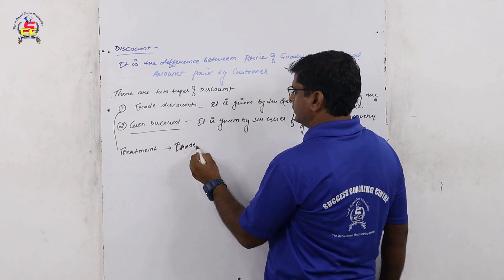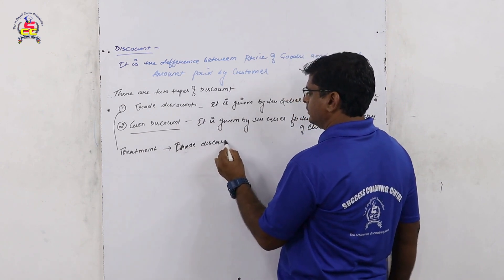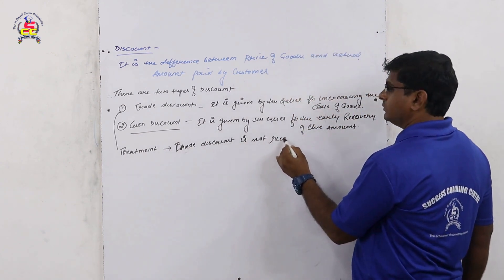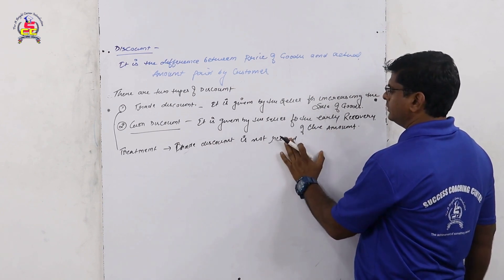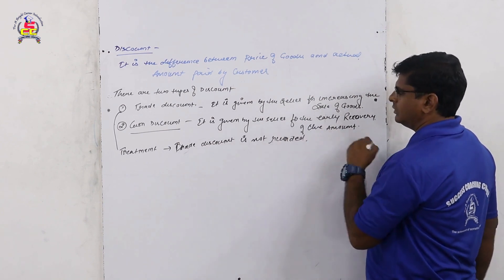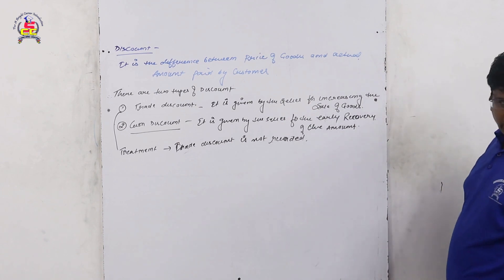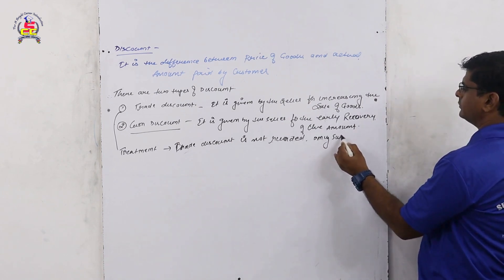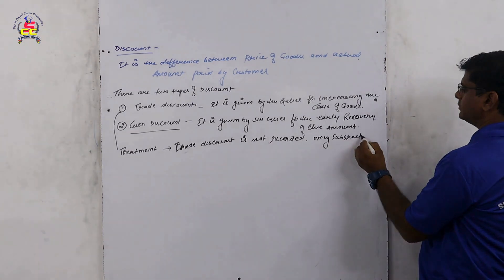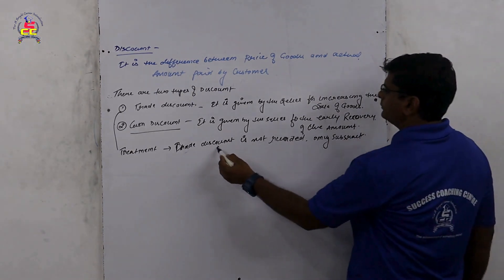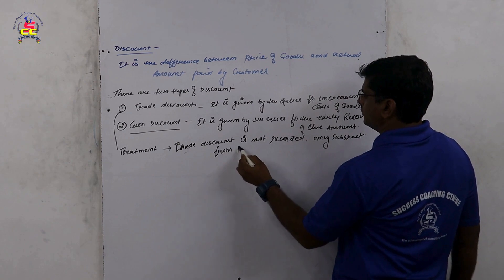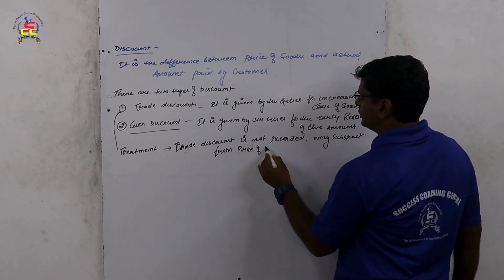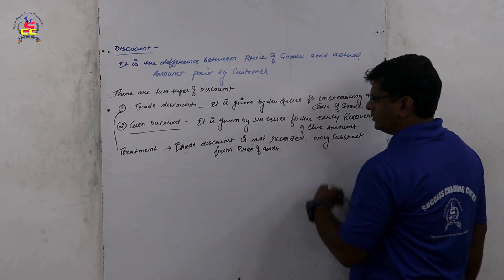Trade discount is not recorded. This is from the list. I subtract discount from price of goods.